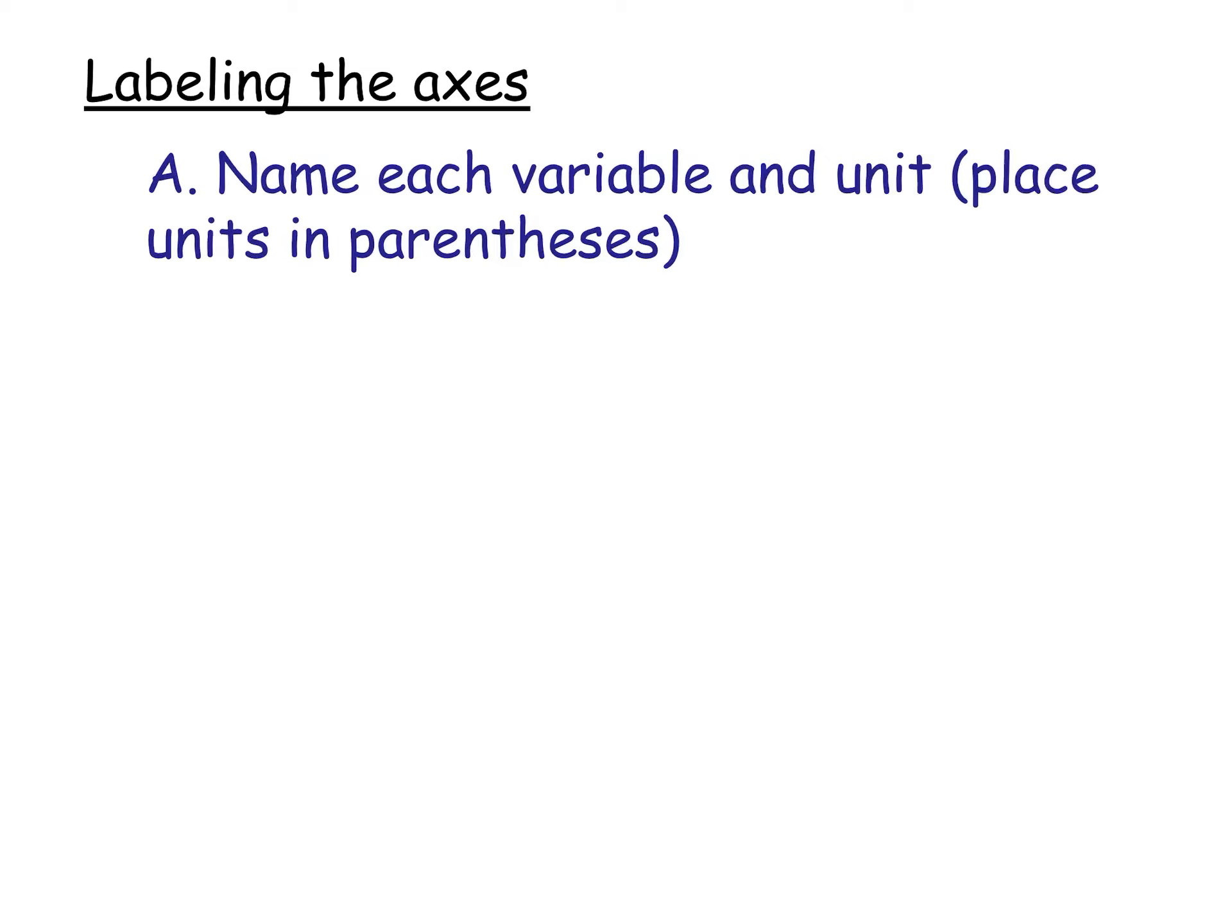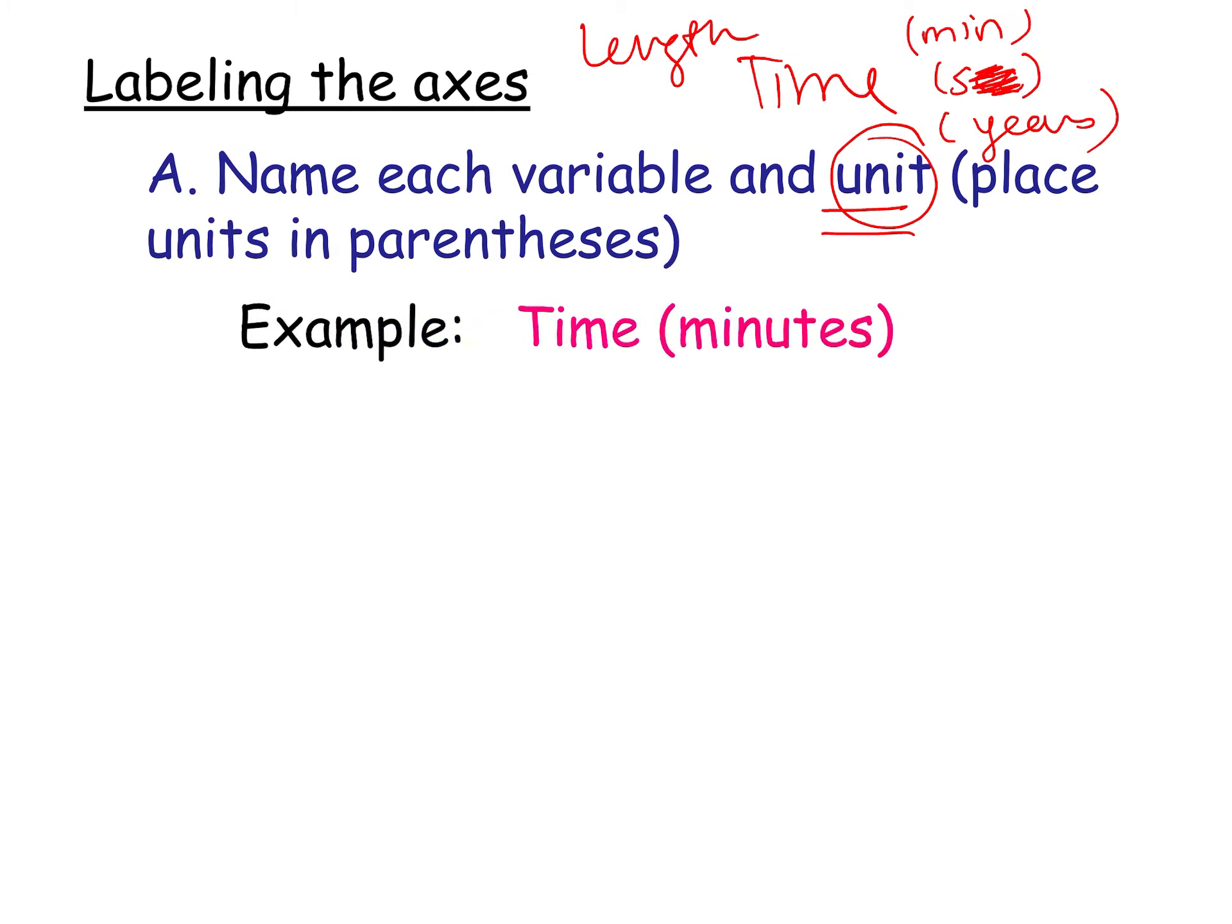When you label your axes, make sure you have your variable and units. You can't just say time, because time can be measured in minutes, seconds, or years. By the way, I made a mistake. Seconds is just s. So time can be measured in various units. You can't also say length, because length can be measured in many different things. So the units, and the units should be in parentheses. Time in minutes. You could also abbreviate. Could you abbreviate with just an M? No, because that's meters.